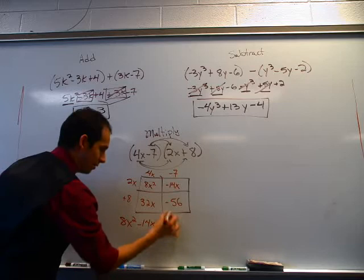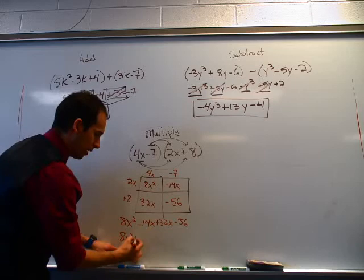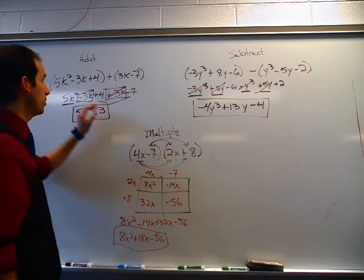And when you combine your like terms, negative 14x plus 32x gives you positive 18x. There's no other x squared term besides 8x squared, so you end up with 8x squared plus 18x minus 56, and you are done. So that's how you multiply your binomials.